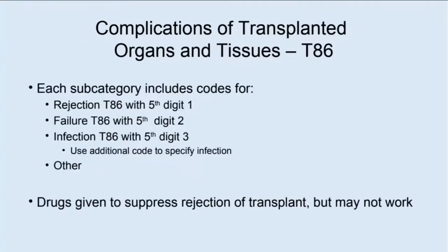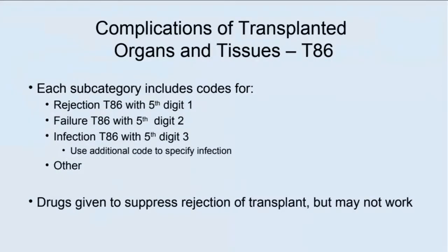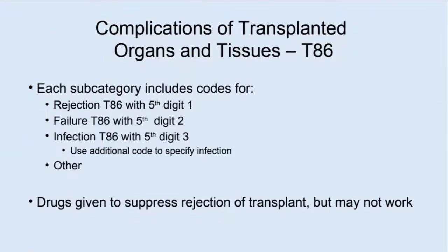Under each of these codes in T86 are separate subcodes for the type of complication: rejection, failure, infection, and other. Rejection is T86 then the specific organ then a fifth digit of 1. Failure is T86 with a fifth digit 2. Infection is T86 with a fifth digit 3, with a note to use additional code to specify the infection. There are also other types of complications.